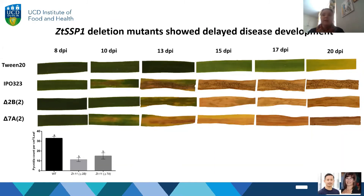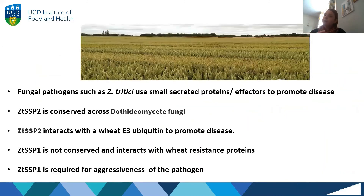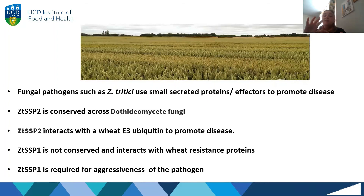To summarise: we know the septoria pathogen uses small secreted proteins to promote disease and aid aggressiveness. We looked at two in detail. One is conserved, expressed early, and seems to disrupt the plant's immune system by binding a ubiquitin E3 ligase. The other is expressed late, appears to be unique to this particular pathogen, and is also required for aggressiveness and disease.